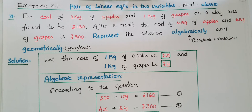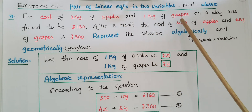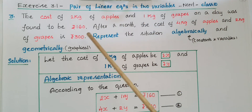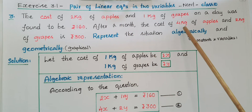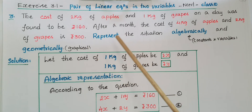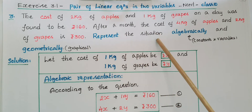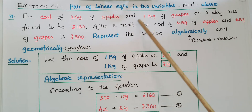Hello everyone. Today I am going to tell the solution of the third problem from Exercise 3.1 from Pair of Linear Equations in Two Variables from NCERT Class 10. The cost of 2 kg of apples and 1 kg of grapes on a day was found to be 160 rupees. After a month, the cost of 4 kg of apples and 2 kg of grapes is 300 rupees. We have to represent this situation algebraically and geometrically.